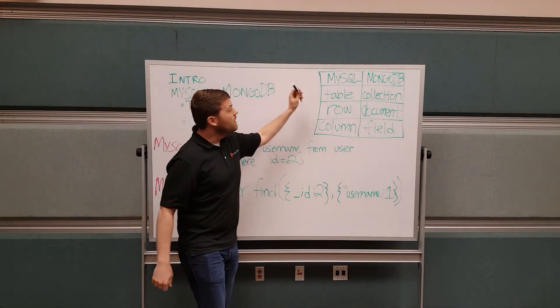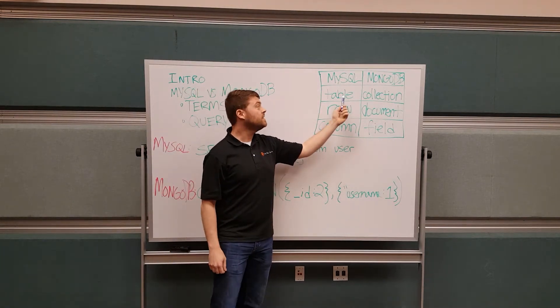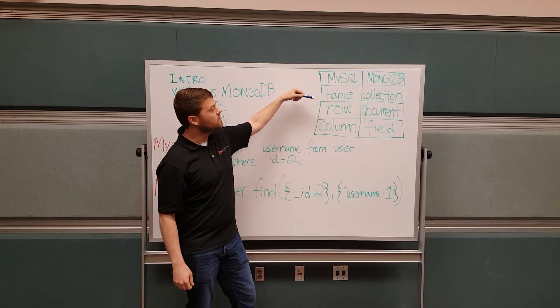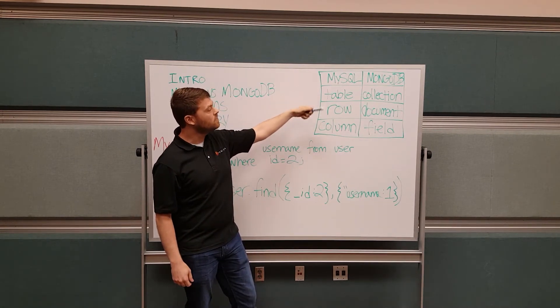We're going to start with terms over here. In MySQL, you should be familiar with table structure. In MongoDB, we call this a collection. It's a document store. It's stored in documents and collections.